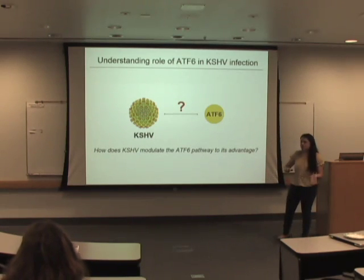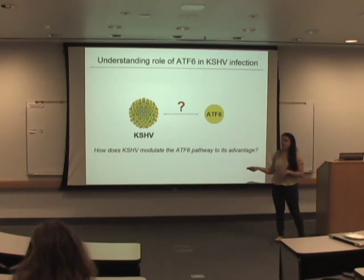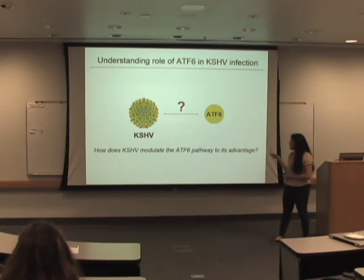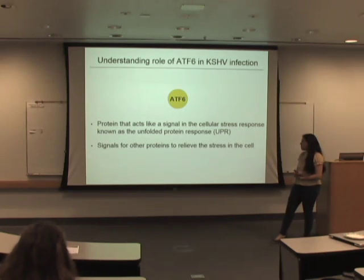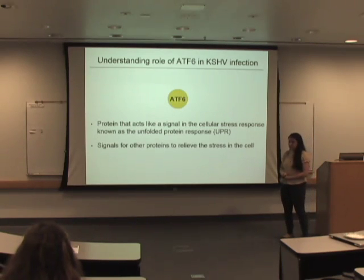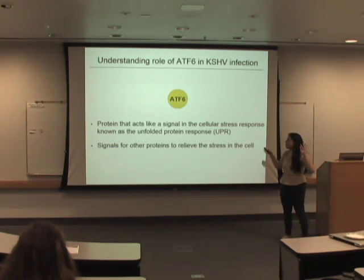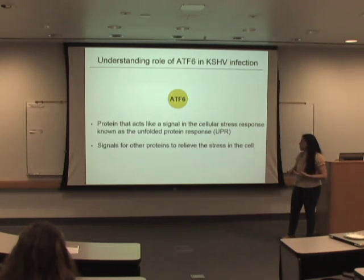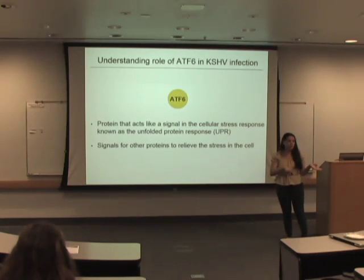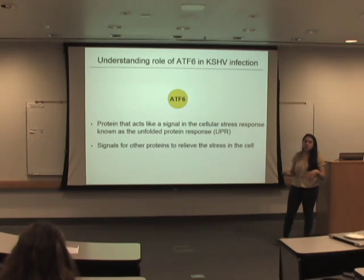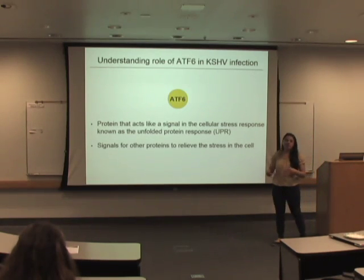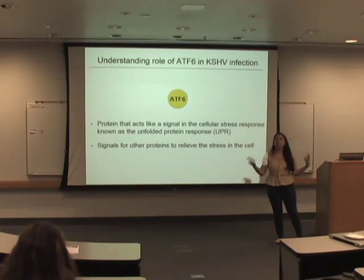ATF6 is one of the main supervisors of the cellular stress response pathway, the UPR. It's a protein that acts like a signal — it signals for other proteins to help relieve stress, and these other proteins are the helpers that make up the UPR.